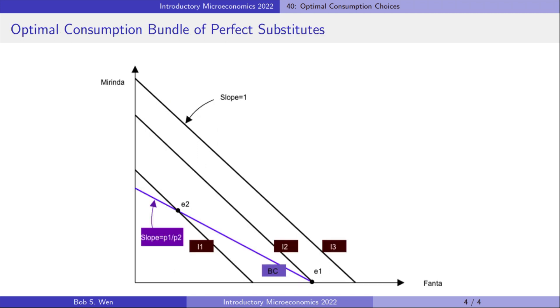Next, let's consider the case of perfect substitutes. For perfect substitutes, the indifference curves are straight lines with slopes equal to 1.